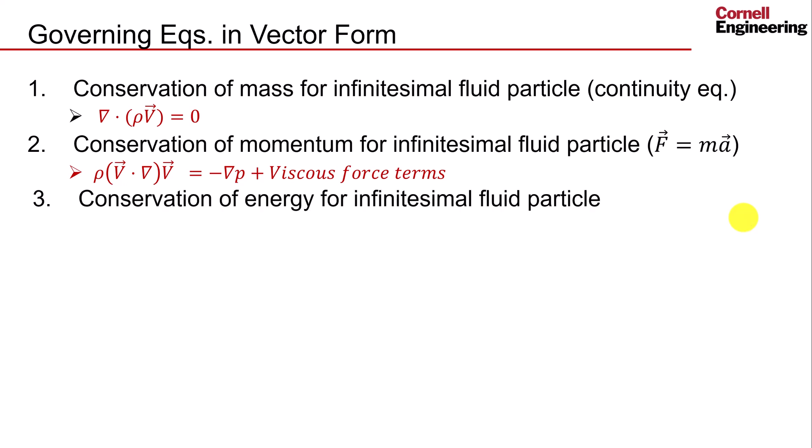This means that an additional equation needs to be added to close the equation set. To do this, we introduce the conservation of energy equation for an infinitesimal fluid element. This provides a fourth equation, shown here, that would be enough to solve for our four unknowns. But it adds an additional unknown from the temperature term. Therefore, to fully close the equation set, we introduce the equation of state, the ideal gas law.